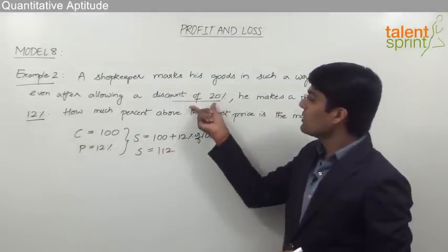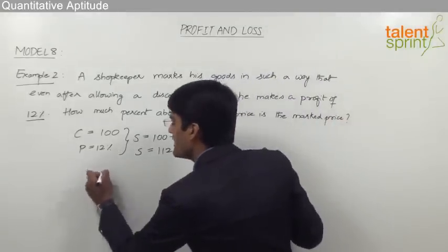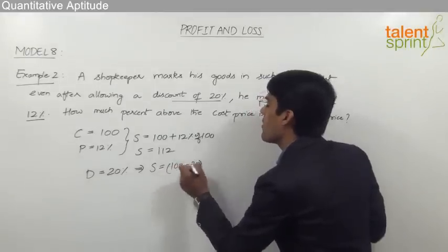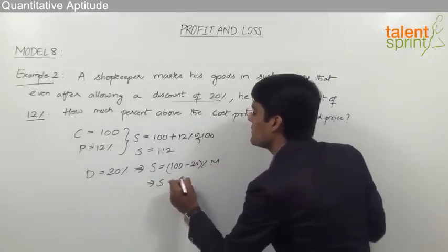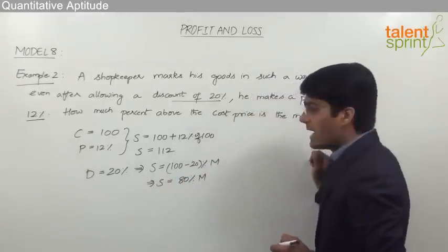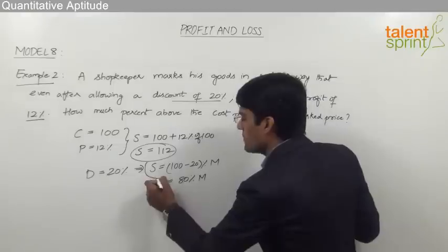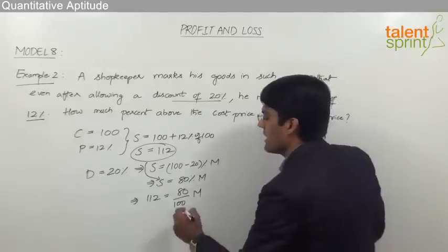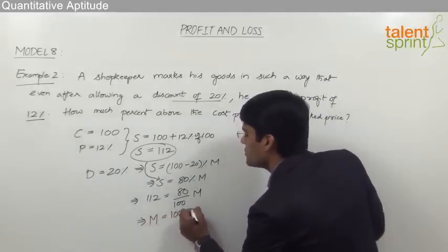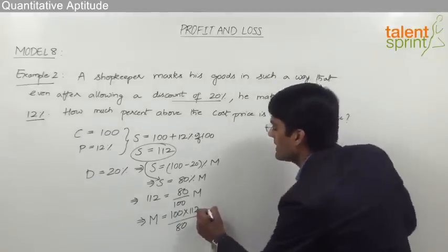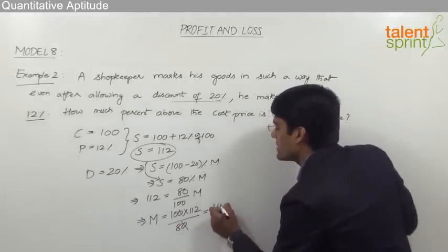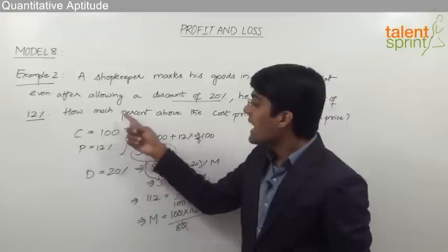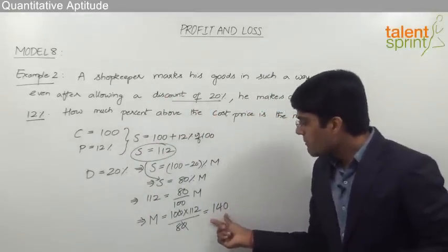At the same time, there was a discount of 20%, so selling price should be 100% minus 20% of the marked price, that is 80% of marked price. We know selling price is 112, so substituting: 112 = (80/100) × M. Therefore marked price M = (100 × 112) ÷ 80, which simplifies to 140 rupees. With cost price 100, the marked price has to be 140.